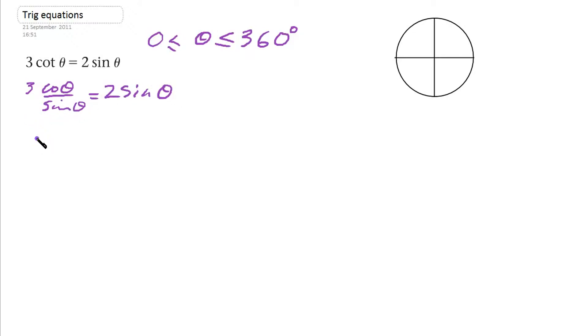Now we're going to multiply throughout by sine theta to get rid of the fraction, and that gives us 2 sine squared theta.